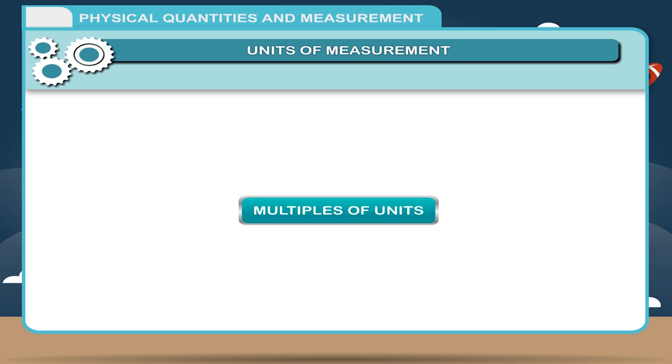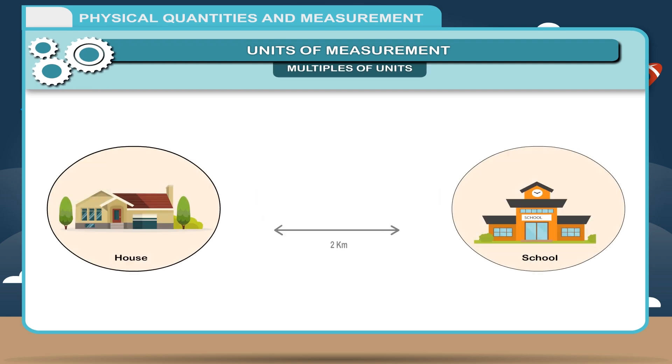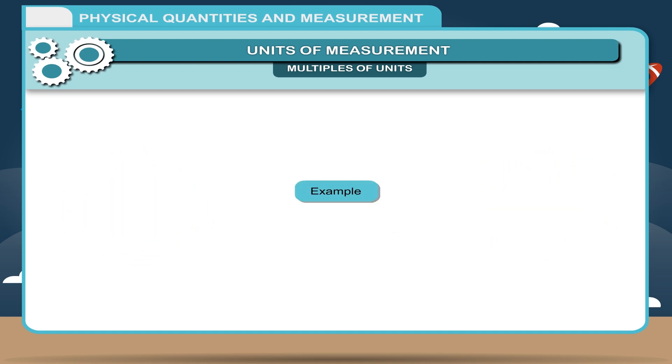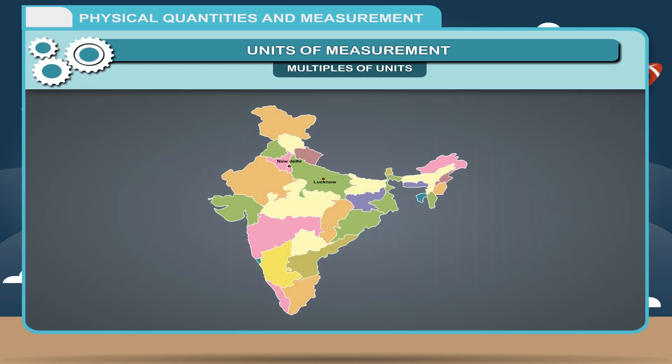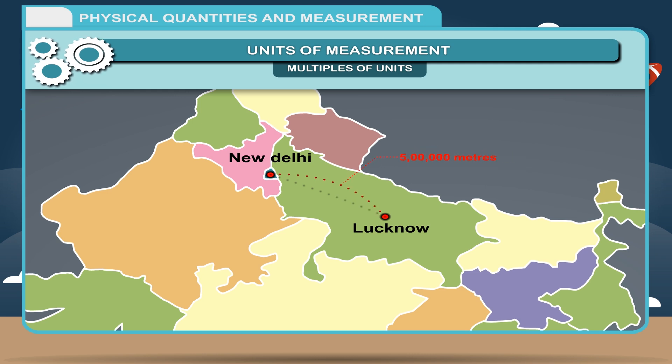Multiples of units: Multiples are the factors used to create larger forms of units. For measuring long distances of length, meter and centimeter are not convenient. For example, the distance between Delhi and Lucknow is approximately 5 lakh meters which is inconvenient to use. The easy way to say this is, the distance between Lucknow to Delhi is 500 kilometers. Here, kilo means thousand. One thousand meter is equal to one kilometer. The higher units are called multiples of units.